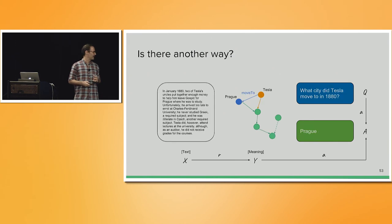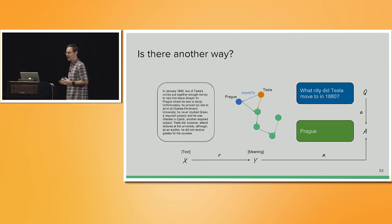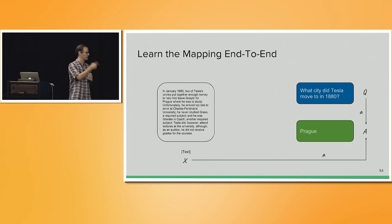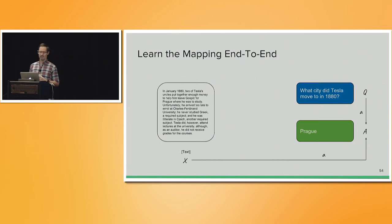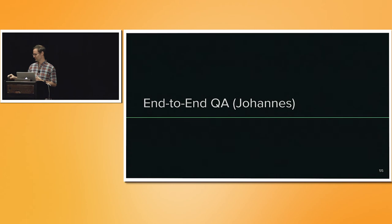All of that leads us to question whether there is another way to think about this whole process of getting from a question to an answer. One answer is to say: let's drop this whole pipeline altogether and learn a function that essentially goes from the text and the question directly to the answer. And this is what Johannes is going to talk about in the second part of the tutorial.